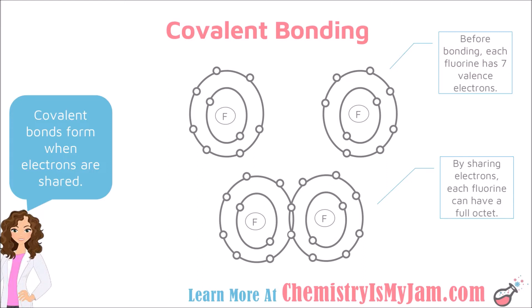Take fluorine, for example. Fluorine is a diatomic element, meaning that it is often found bonded with itself. Let's take a look at the type of bond that forms between two fluorine atoms. Each individual fluorine atom, before it bonds, has 7 valence electrons. Each one wants to have 8. If fluorine comes together with another fluorine atom and each one shares an electron with the other, they will each have 8 valence electrons, satisfying the octet rule and forming a covalent bond.